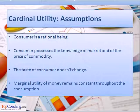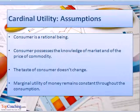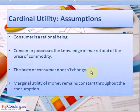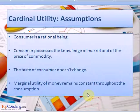There are certain assumptions to be made while assessing the cardinal utility of a commodity. First, the consumer is considered to be a rational human being. Second, the consumer possesses knowledge of the market and of the price of the commodity. Third, the taste of the consumer doesn't change. And lastly, the marginal utility of money must remain constant throughout the consumption of the commodity.